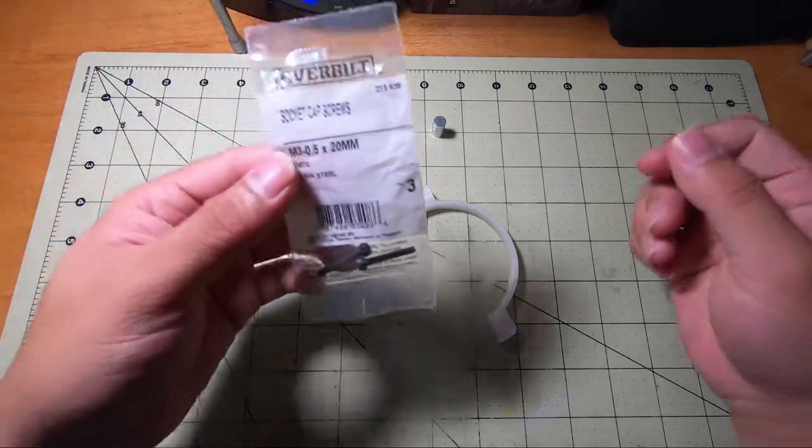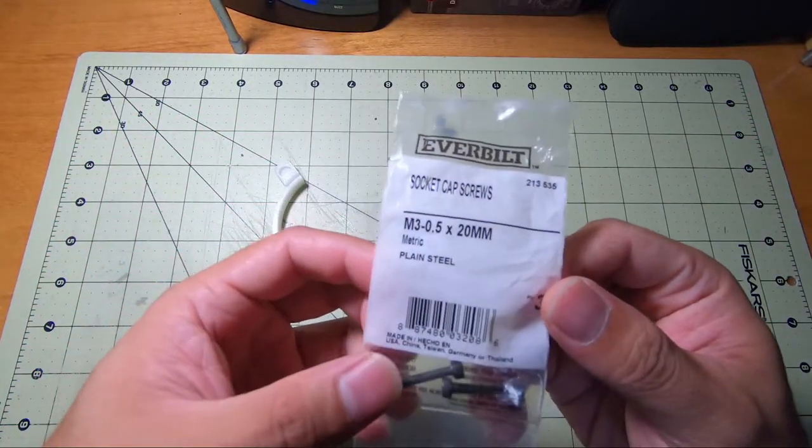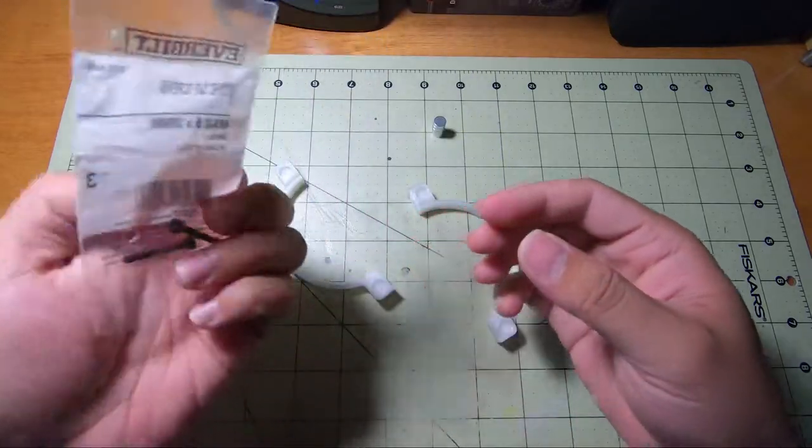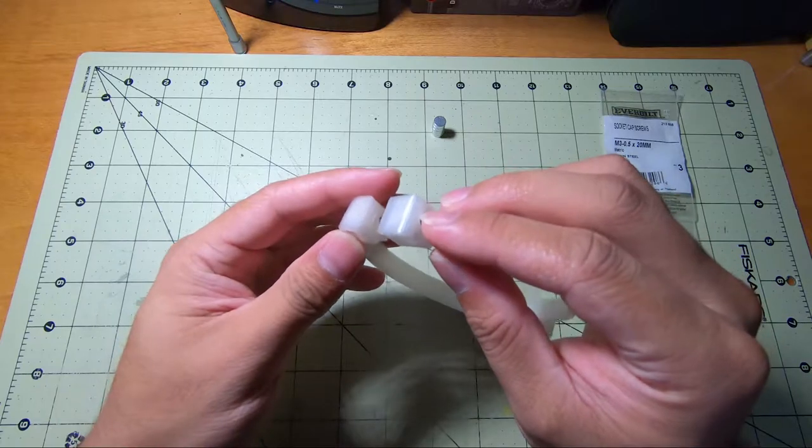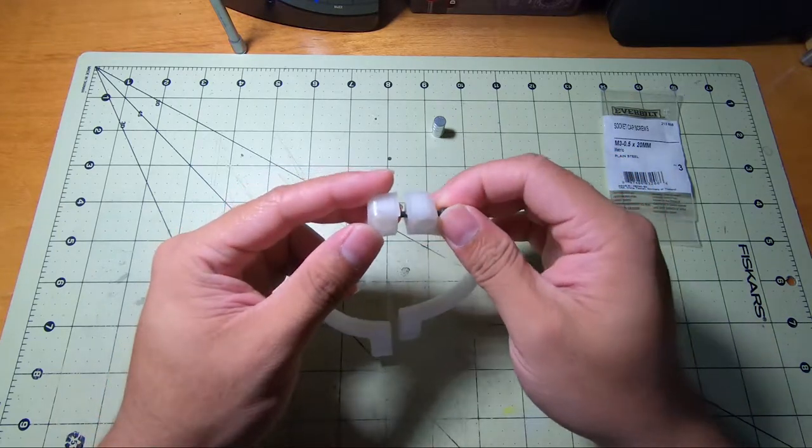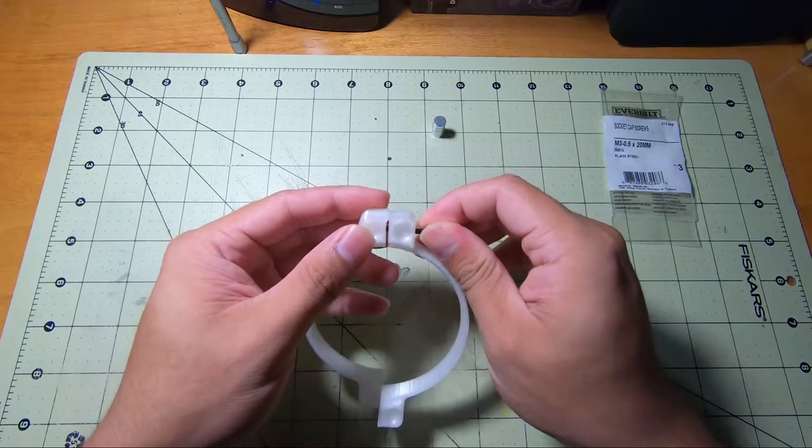The last part I needed were these M3 by 20mm cap screws. I got these at a local hardware store and they're pretty easy to install. They simply go through the clearance hole in the top portion and thread into the bottom half of the part.